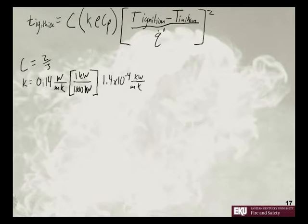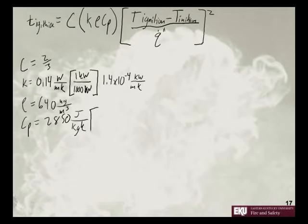We said rho is equal to 640 kilograms per meter cubed. We said heat capacity is equal to 2850 joules per Kelvin. We wanted this in terms of kilojoules, so we have a thousand joules for every one kilojoule. So that's equal to 2.85 kilojoules per kilogram Kelvin.